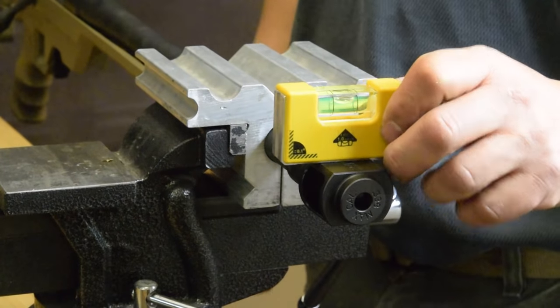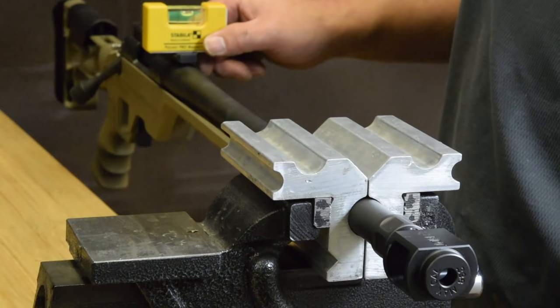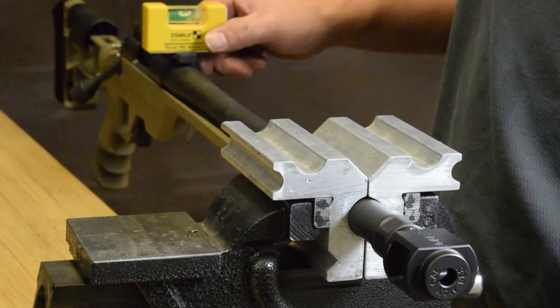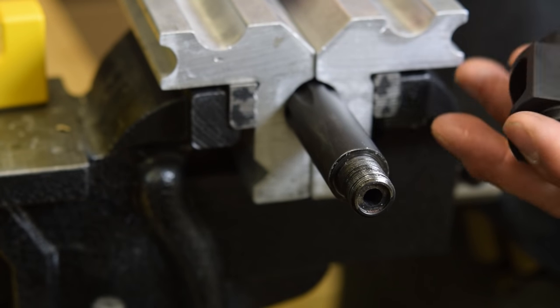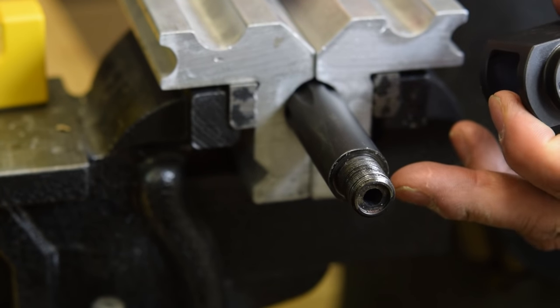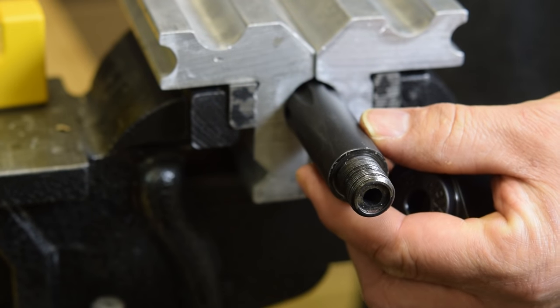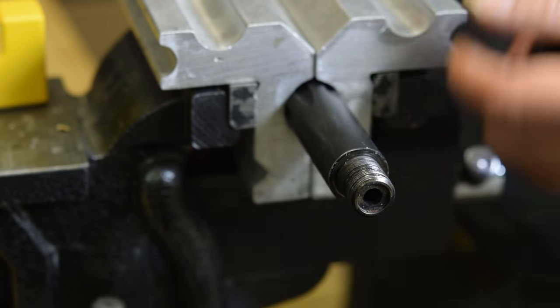Verify the level between the brake and your scope rail and you're done. For installation of our brake on a factory threaded muzzle, first support the rifle in a vise and level it as before.